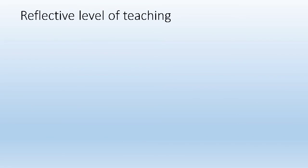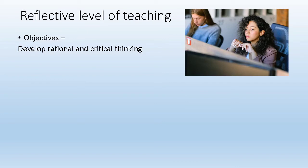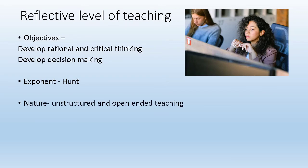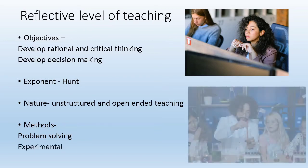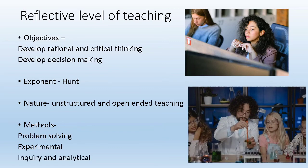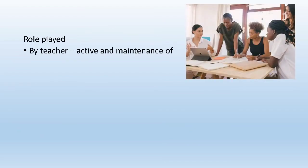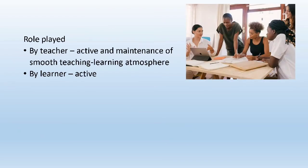The last and topmost level of teaching is reflective. Iska objective hai aapki critical thinking aur decision making power ko strong karna. Iske exponent hain Hunt. The feature of this level is unstructured and open-ended teaching. For effective teaching at this level, the methods adopted are problem-solving — learner ko ek problem di jaati hai, as to why these herbivorous animals eat only green leaves. So they do experiment, inquiry and analytically analyze the statement — that why is it so. This level of teaching helps in tapping the creativity skills and problem-solving skills of a learner.